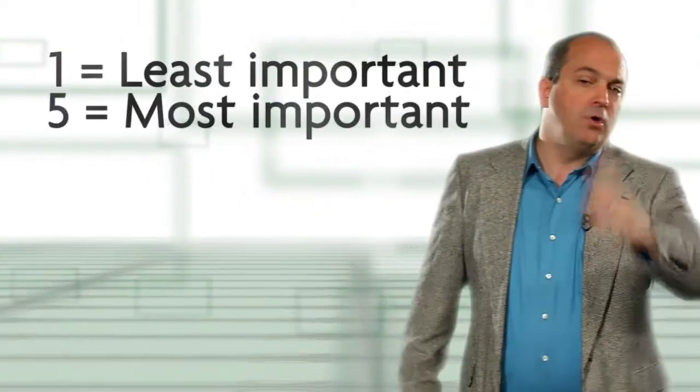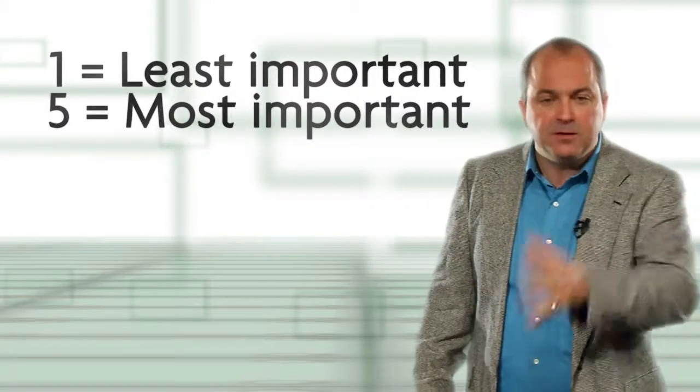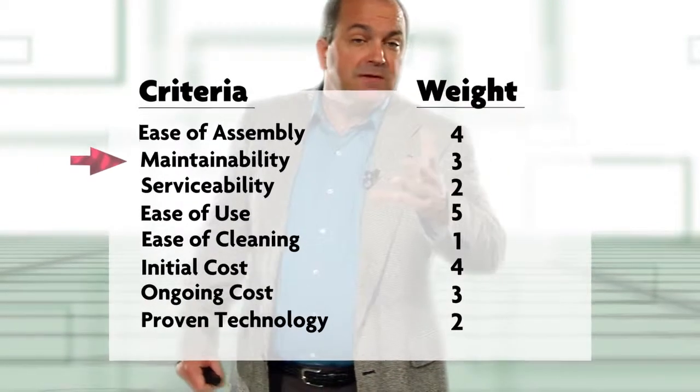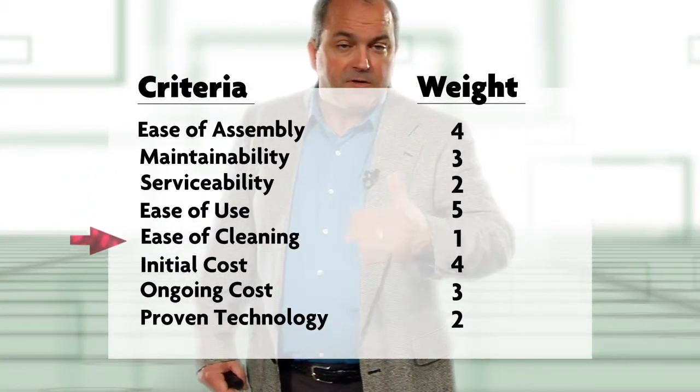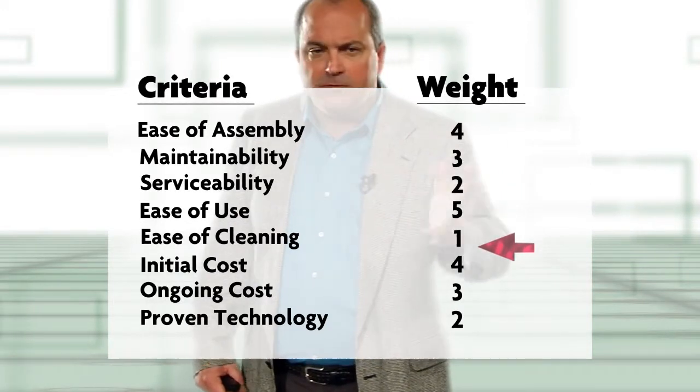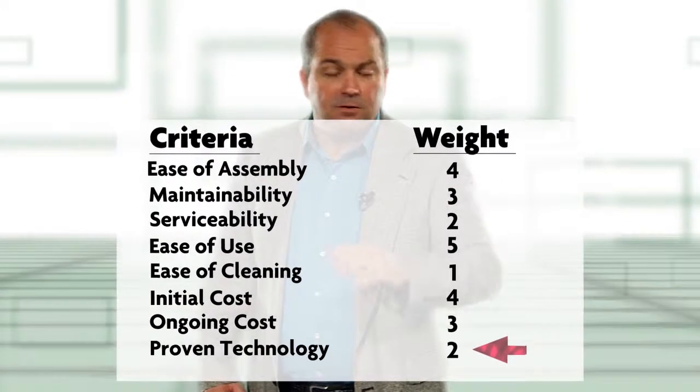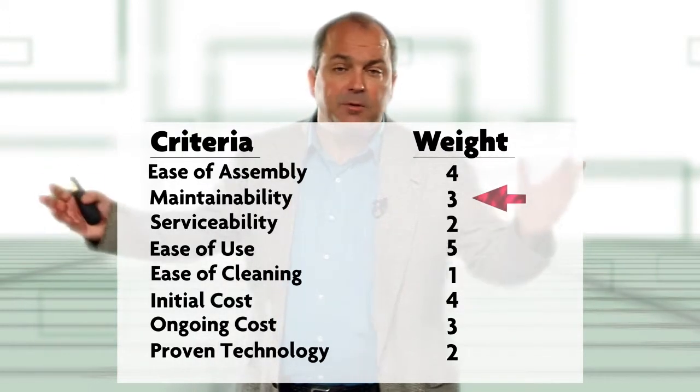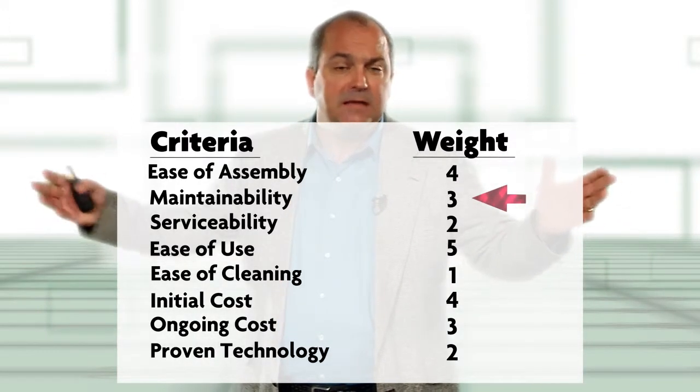With 1 being the least important and 5 being the most important. This is the same example we talked about before where we had ease of assembly, maintainability, serviceability, and so forth as our criteria. You see the weights listed: 4, 3, 2, 5, 1, 4, 3, 2. Now you see that some numbers like 4 or 3 are used multiple times. That's fine, any number can be used multiple times. The key is we want to use the entire scale.